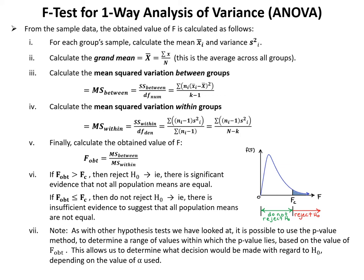Step 6: if F obtained is greater than F_c, reject H₀ — there is significant evidence that not all population means are equal. If F obtained is less than or equal to F_c, do not reject H₀. Step 7: it is also possible to use the p-value method — based on the value of F obtained, determine a range of values within which the p-value lies to determine what decision would be made depending on the value of alpha used.